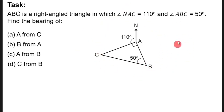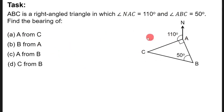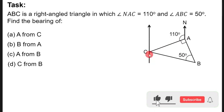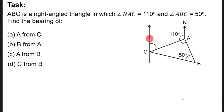Remember from our previous lesson on bearings: when they say find the bearing of A from C, you go to point C, draw a north line, then move clockwise from north to the line where A is. The angle between the north line and that line is the bearing of A from C.